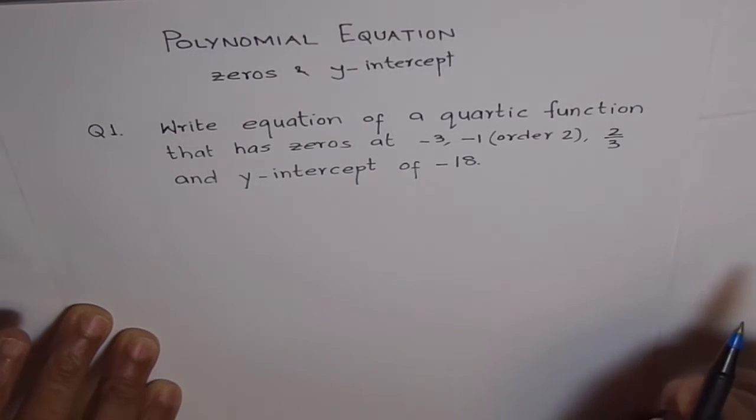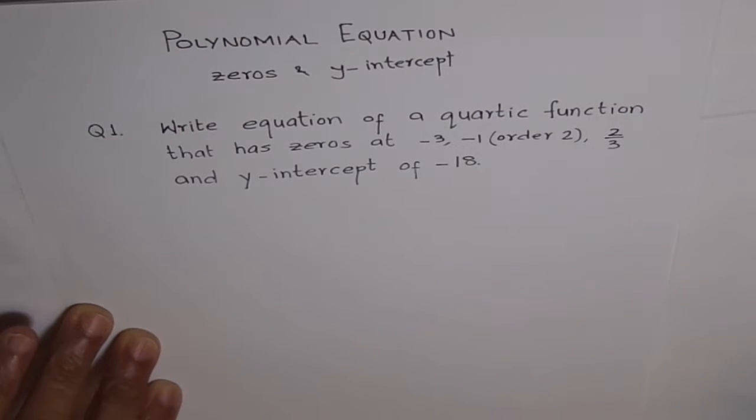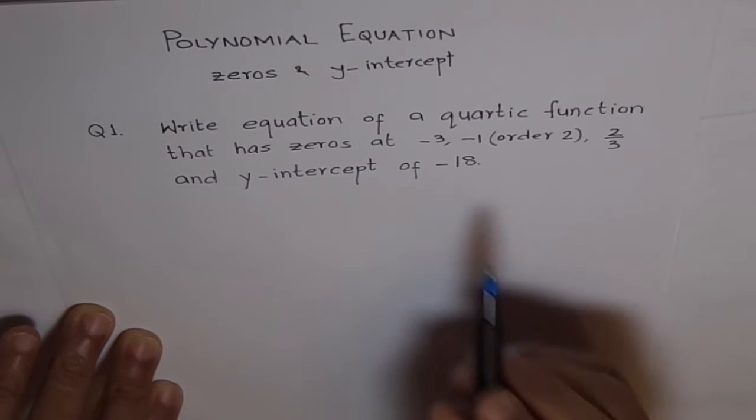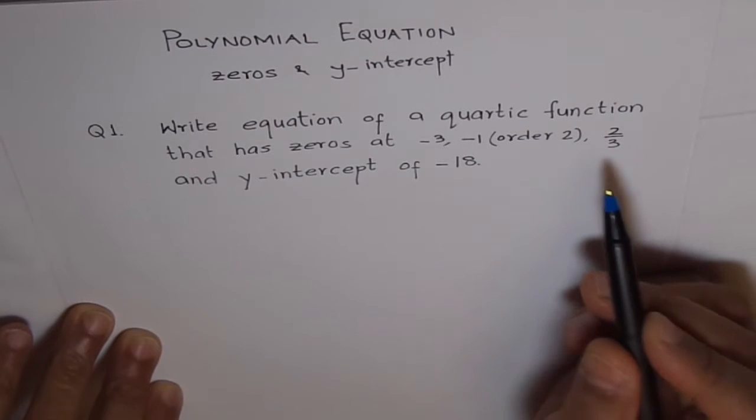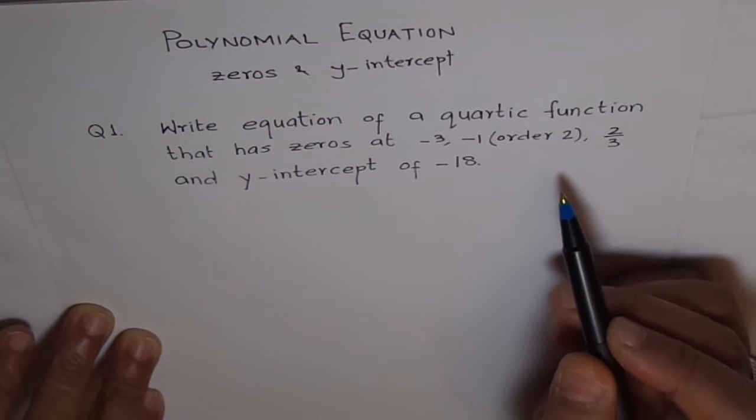So, we will do this. Now, what is a quartic function? Quartic function has degree of 4. So, we need a polynomial of degree 4. We are given 3 particular zeros and 1 is of order 2. So, of course, we have zeros which satisfy the condition.